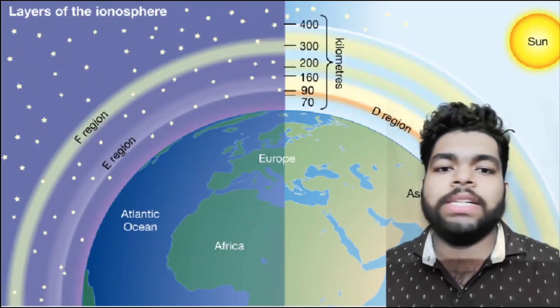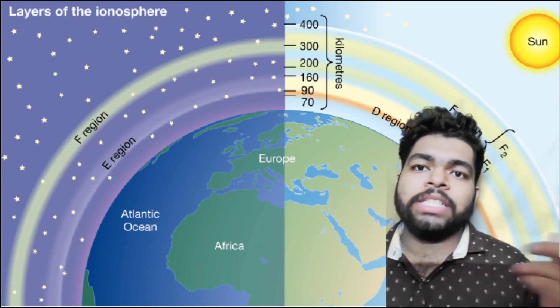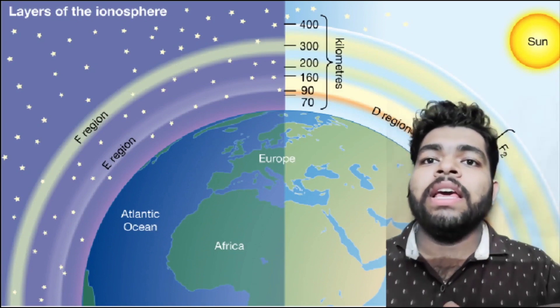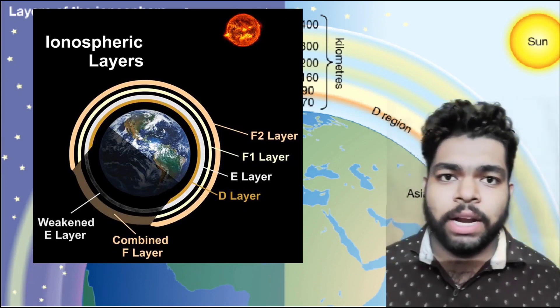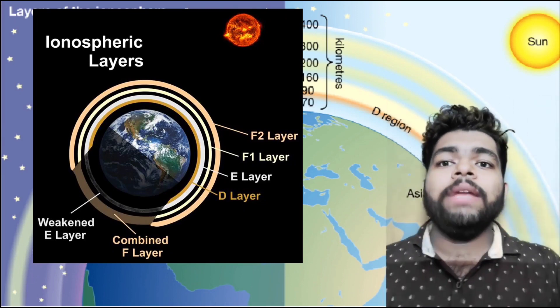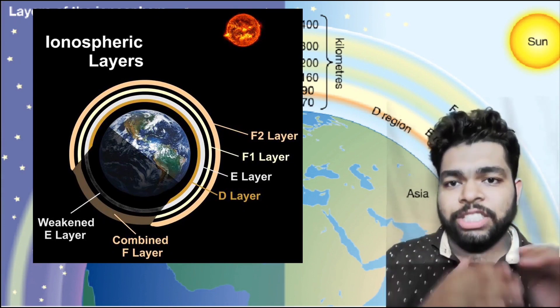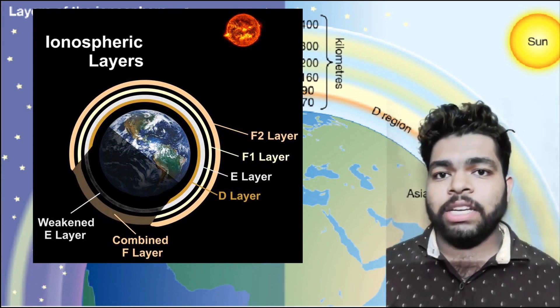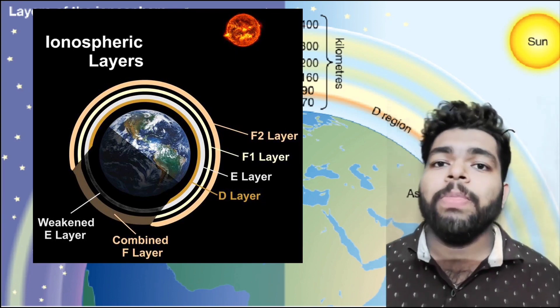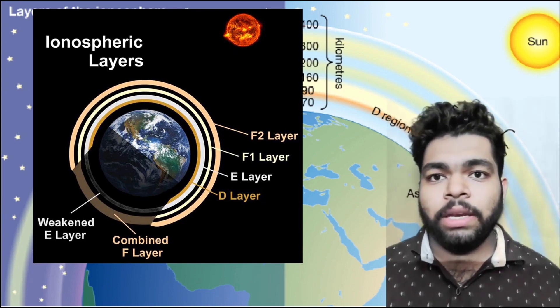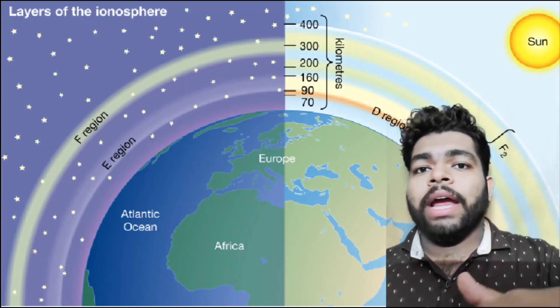The F layer regions, also known as Appleton regions, are the uppermost ionization region. Being the topmost layer, they are highly ionized. Some ionization remains even after sunset.